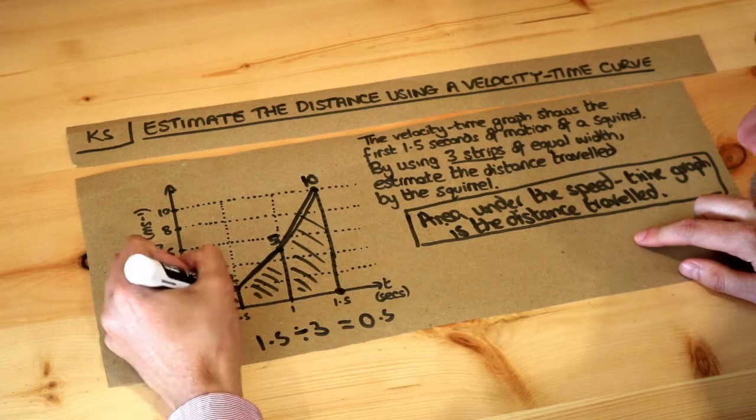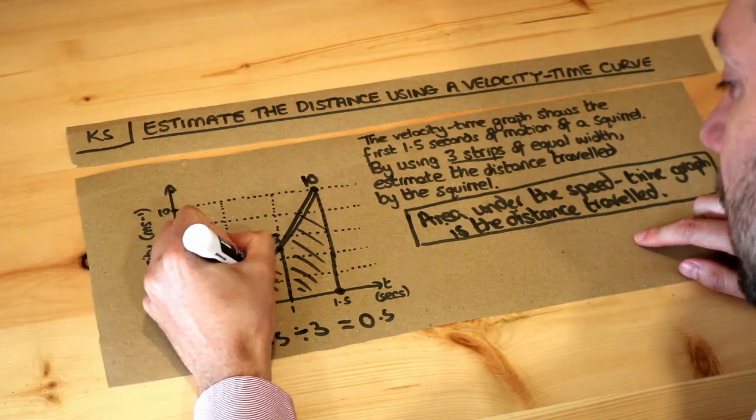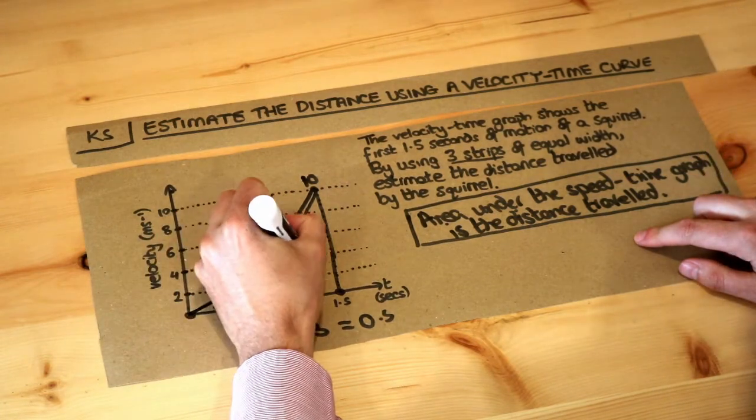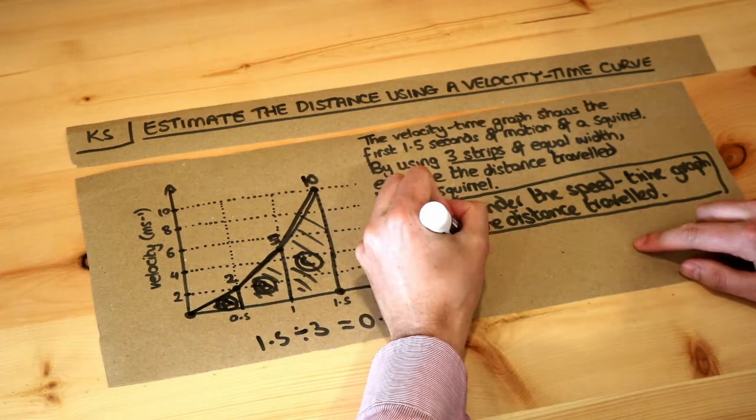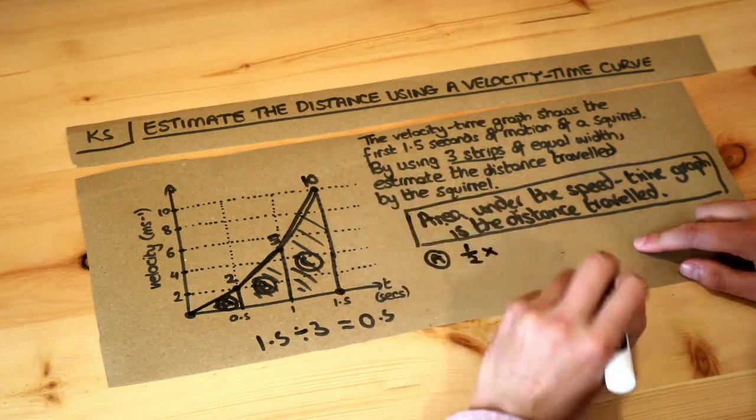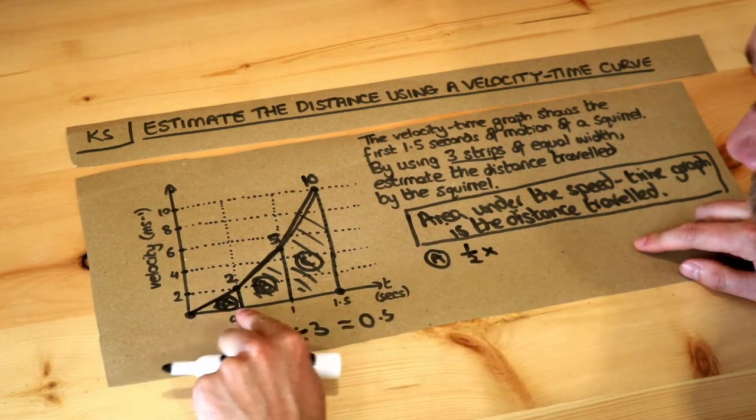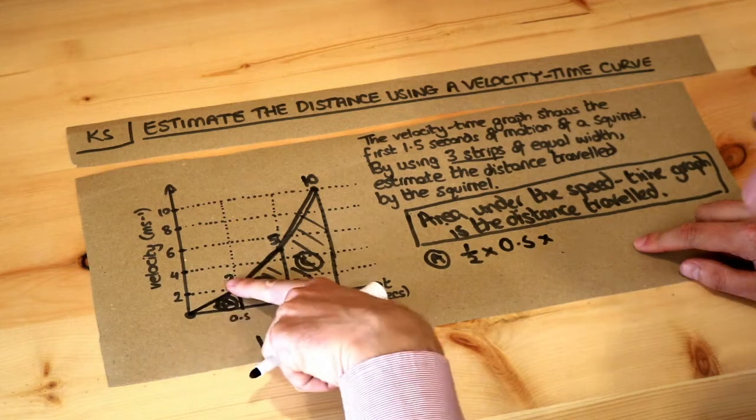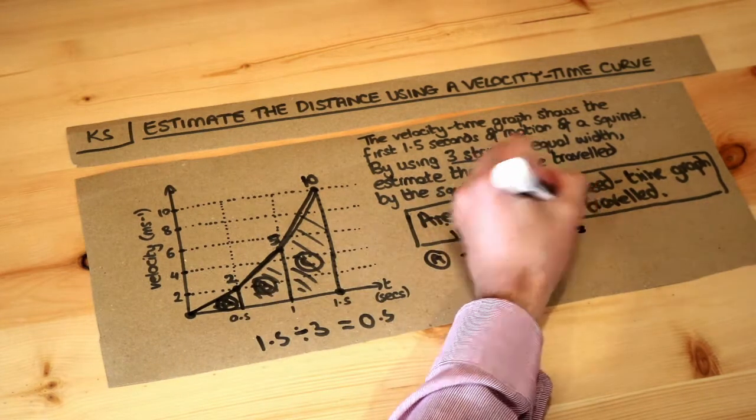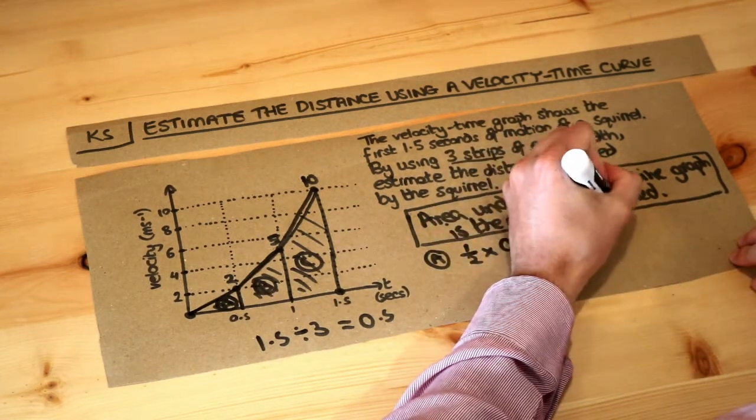We've got a triangle here, well let's just label these as a, b, and c, just so I can do the calculation separately. Let's find the area of a first. This is just a triangle, so the area is going to be half times base times height, so half times the base, which is 0.5, multiplied by the height, which we wrote on there was 2, and if we do that, that just gives us 0.5.